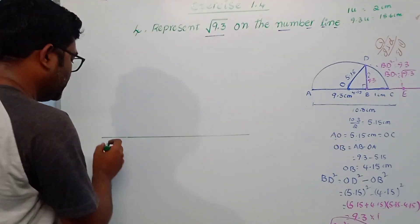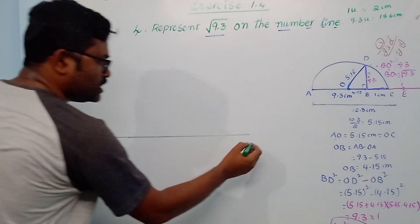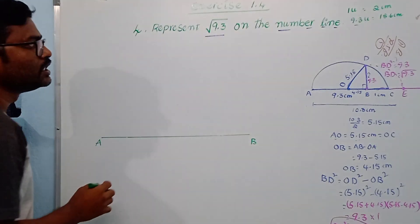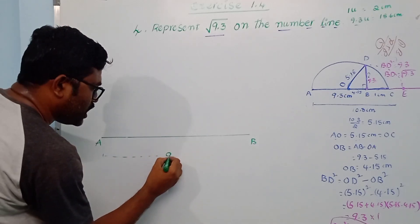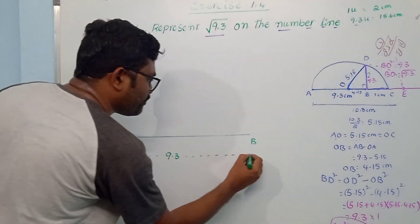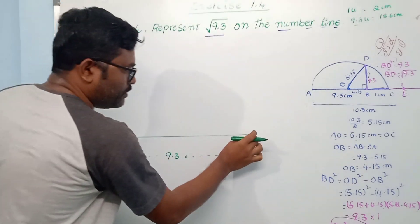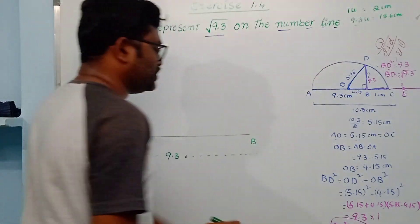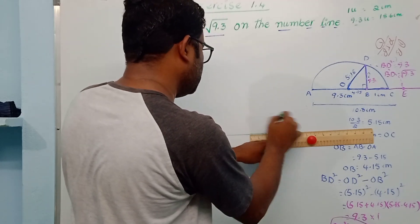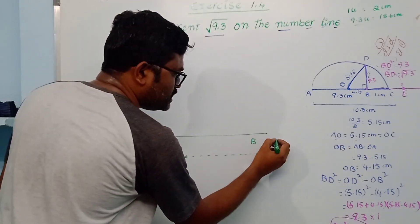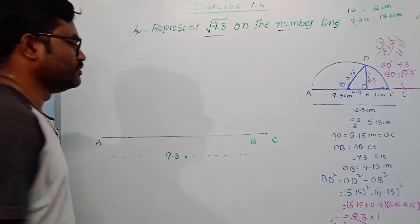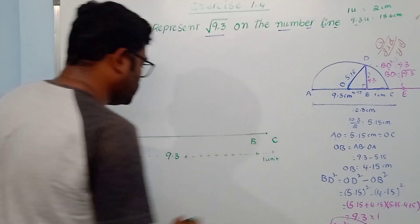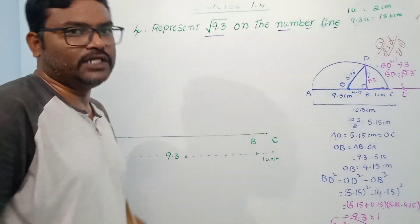This is completely 18.6 centimeters representing 9.3 units. Point C is at 1 unit beyond the 9.3 mark, making the total AC equal to 10.3 units on the number line.